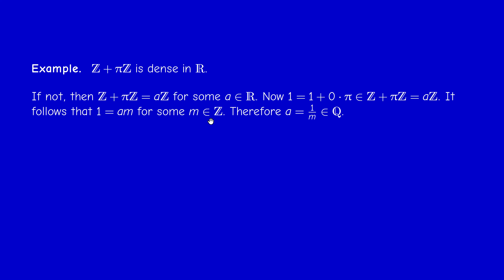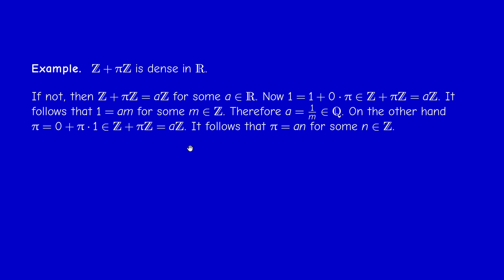This implies that a is a rational number. On the other hand, π = 0 + π·1, so π belongs to Z + πZ, which equals aZ by assumption. So π = a·n for some integer n. Since a is rational, a·n is rational, so π would be rational. But π is irrational — contradiction. So no matter how you choose a, the first alternative cannot hold. Therefore Z + πZ is a dense subgroup of R+.